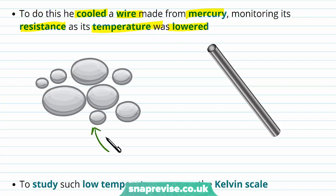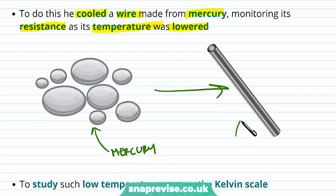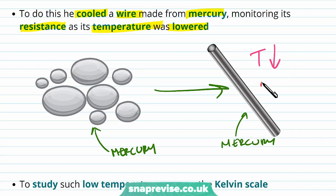To do this, he cooled a wire made from mercury, monitoring its resistance as its temperature was lowered — investigating how resistance varied when the temperature was decreased to very low temperatures.